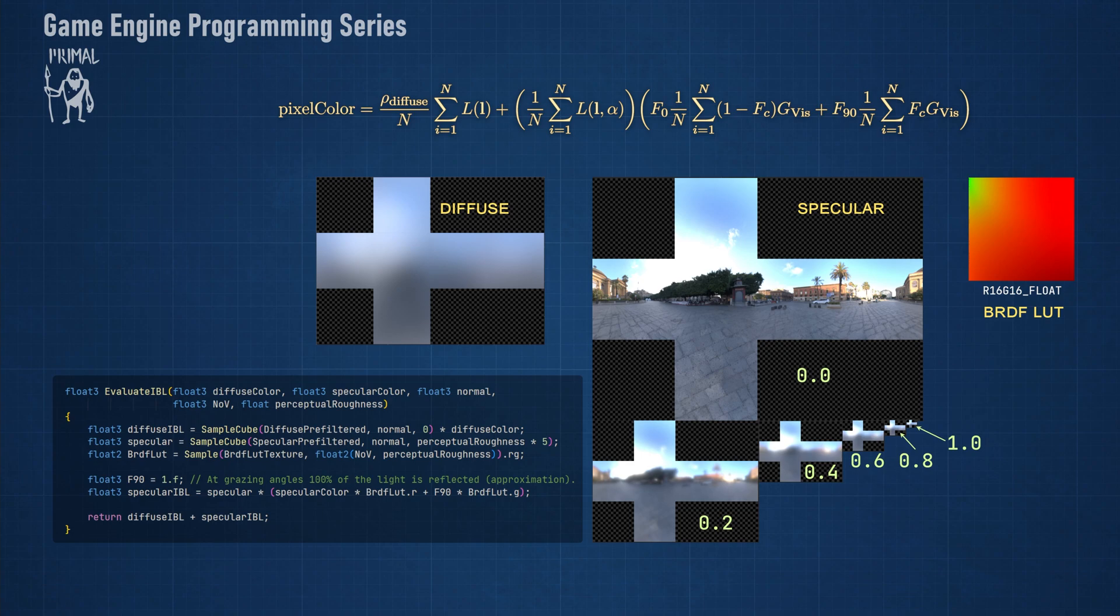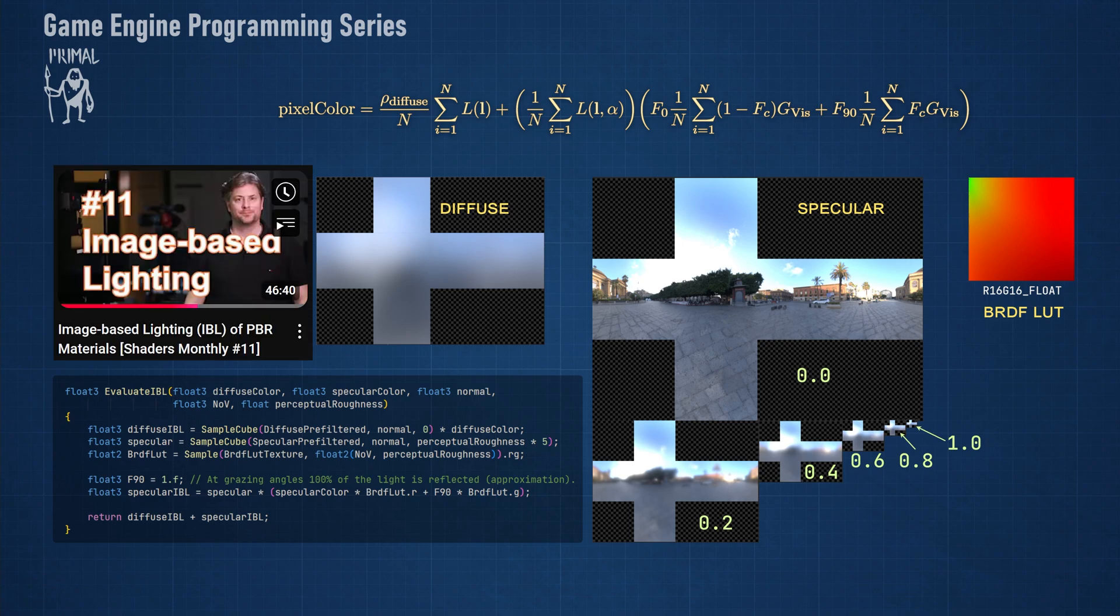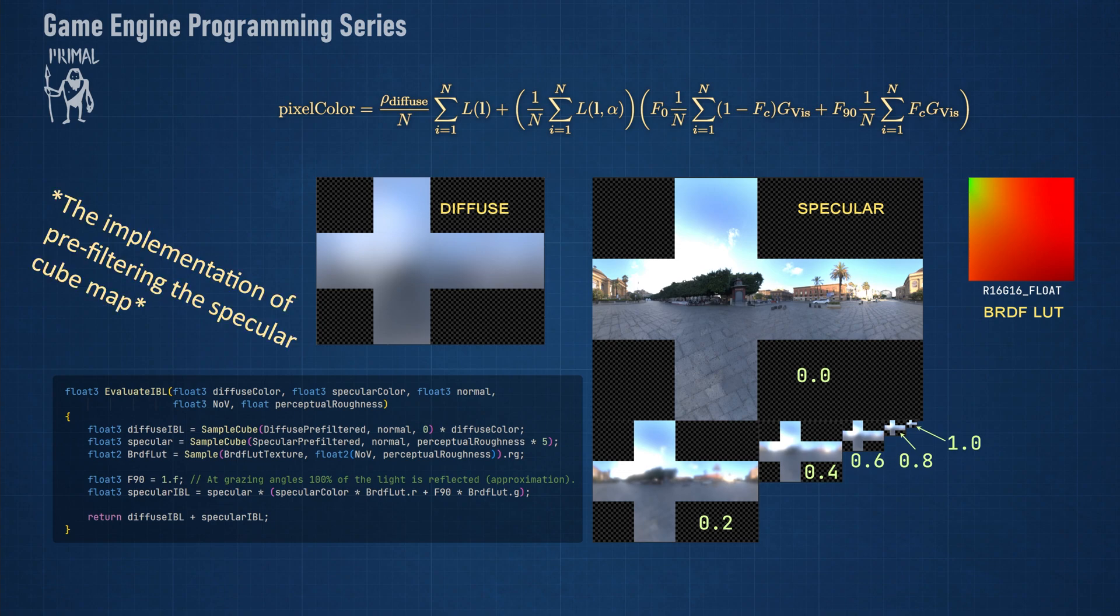This was all the theory behind image-based lighting. If you'd like to watch another video that explains this topic really well, feel free to watch this one, which helped me a lot to understand the mathematics. We are going to look at pre-filtering the specular cube map in the next video.